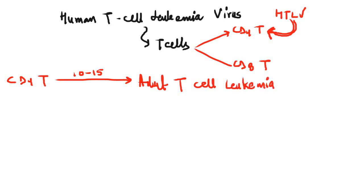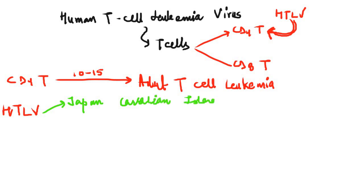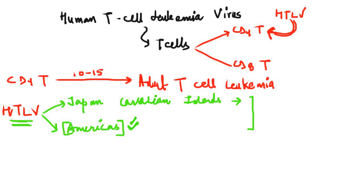The human T-cell leukemia virus, or HTLV, is found in Japan and the Caribbean islands, where it is endemic — meaning the infection is already present in those areas. While it can sporadically occur in countries like America and other parts of the globe, the infection is not so common there. After HTLV infects, there is a resting latency period of approximately 10 to 15 years, after which the full-fledged disease will develop.